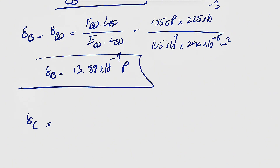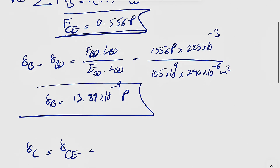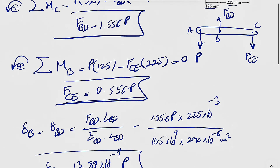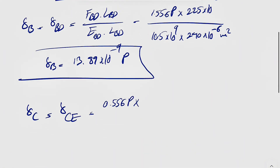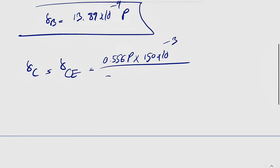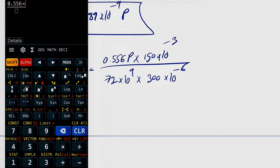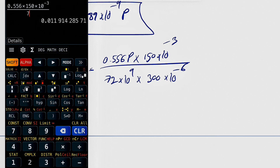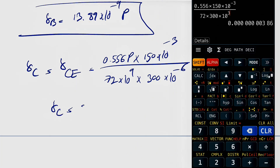We do the same for point C — the deformation of member CE uses the same formula. We replace the force with 0.556P, the length of member CE is 150 millimeters, so 150×10⁻³. The elastic modulus for aluminum is 72 GPa and the cross-sectional area is 300 millimeters squared, so 300×10⁻⁶. Calculating: 0.556 × 150 × 10⁻³ over 72 × 300 × 10³, giving us 3.86×10⁻⁹P.